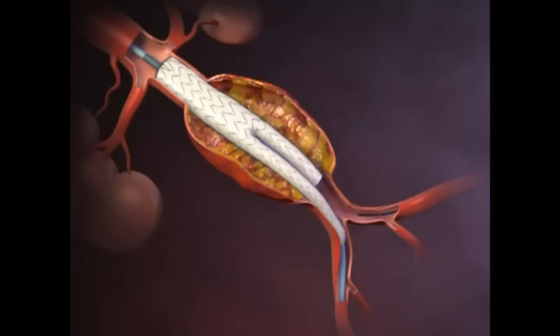A second guide wire is introduced through the contralateral iliac artery into the open lumen of the contralateral limb of the stent graft.